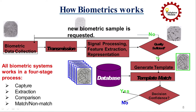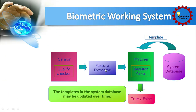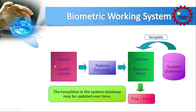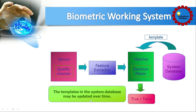All biometric systems work in four states: first, capture — that is, data collection; second, extraction; third, comparison; and finally, match or non-match. In the working system, first a sensor quality checker, secondly a feature extractor, and thirdly it forwards to the database. If your data does not match, it shows false; if the data matches in the database, it shows true. Templates in the system database may be updated over time.